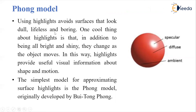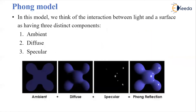Using highlights avoids surfaces that look dull, lifeless, and boring. One thing about highlights is that in addition to being bright and shiny, they change as the object moves. In this way, highlights provide useful visual information about the shape and motion. The simplest model for approximating surface highlights is the Phong model, proposed by scientist Bui Tuong Phong — that's why it is called the Phong model. In this model, we think of the interaction between the light and the surface as having three distinct components: ambient, diffuse, and specular. Combining these three gives the Phong reflection.